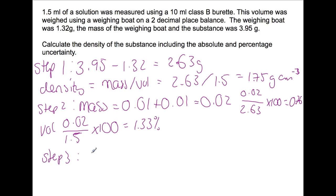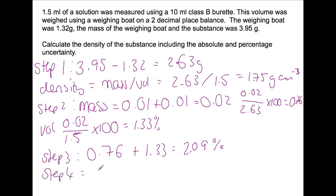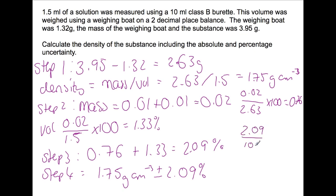Step three: add the two percentages together — 0.76% plus 1.33% gives a total percentage uncertainty of 2.09%. Step four: we can write the density as 1.75 grams per cm³ plus or minus 2.09%. We can also express this as an absolute uncertainty: 2.09 divided by 100 multiplied by 1.75 gives 0.037 grams per cm³. So we can also write the density as 1.75 plus or minus 0.037 grams per cm³.